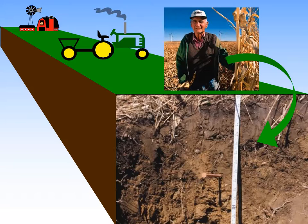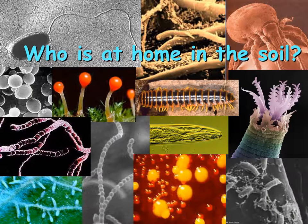If you could shrink down small enough to enter an earthworm burrow, smaller still to squeeze through the space between granules of soil, small enough to sit on a piece of silt — what forms of life would you see? What would they be doing? Who would be eating whom? In this session we're going to do just that. Let's take a closer look at who's living in the soil system — the variety of organisms, the functions they perform, how abundant they are, how they interact, and how soil management practices affect soil life.